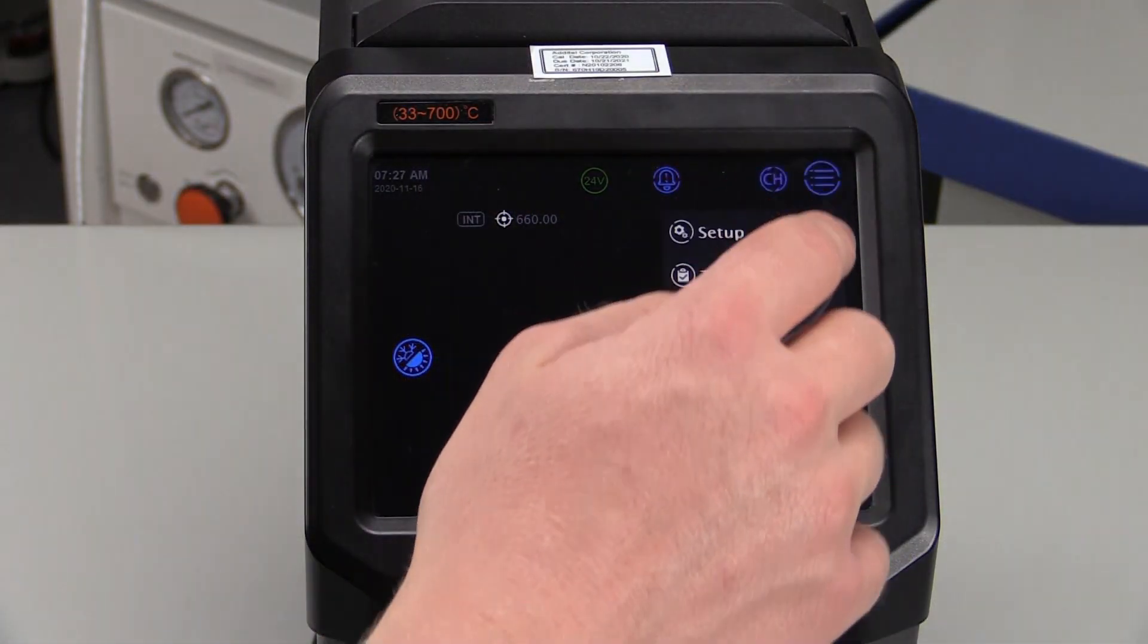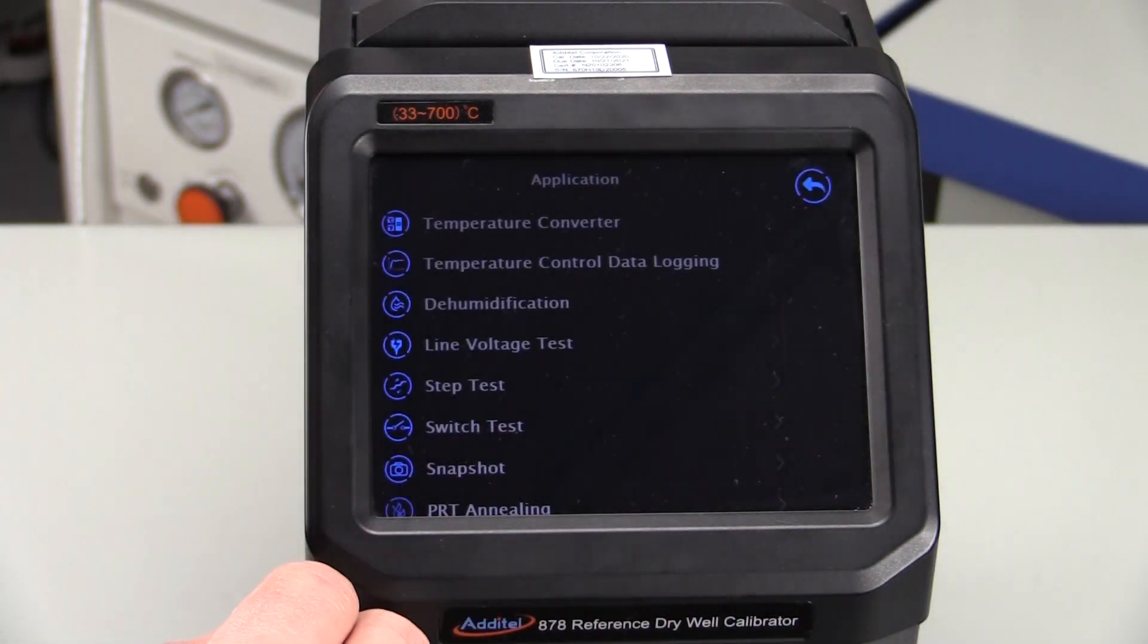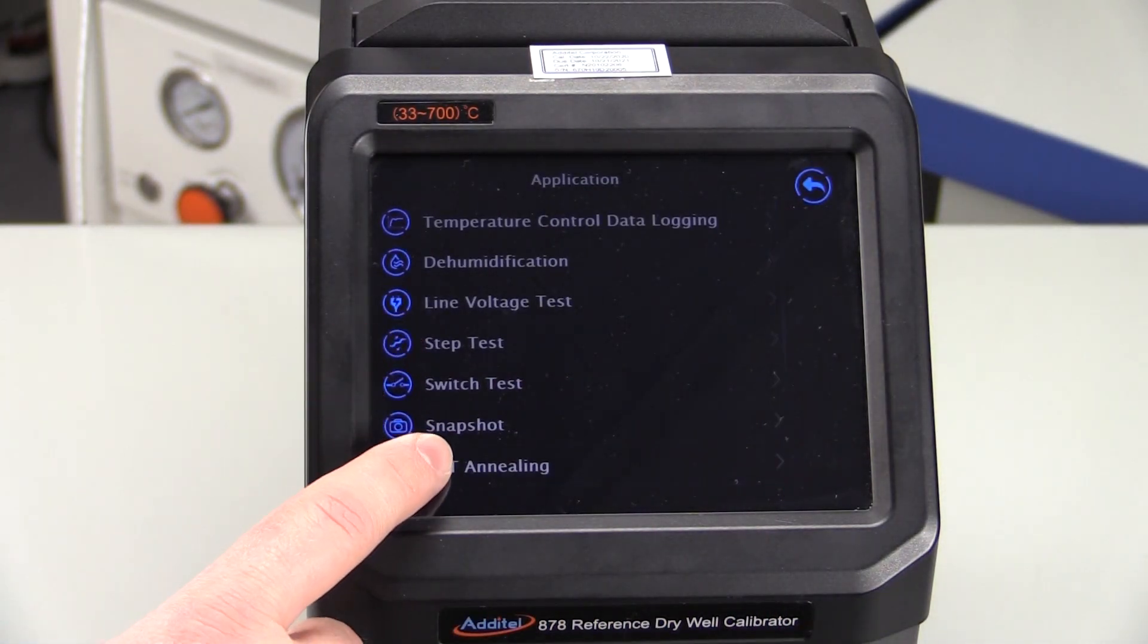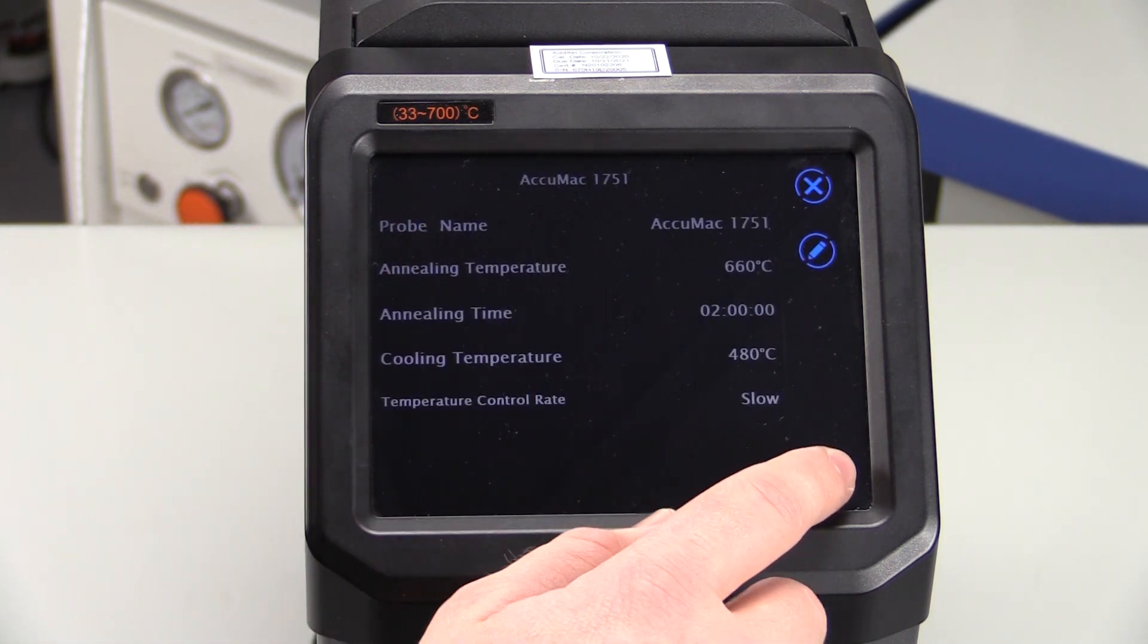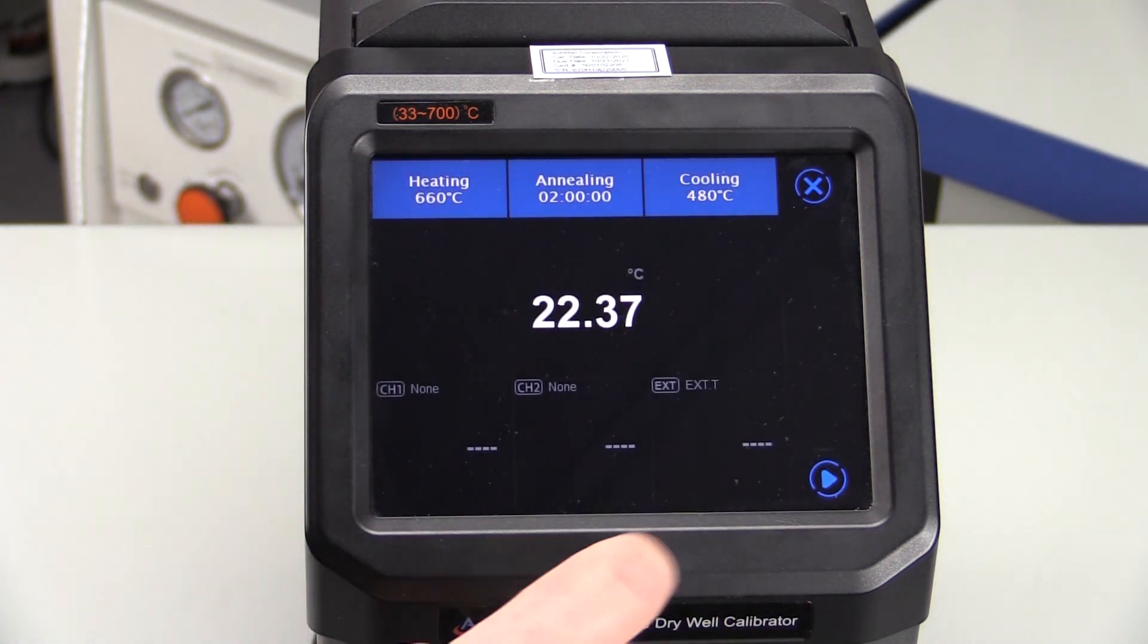Next, we will navigate to the automated annealing procedure. We can create a new procedure by touching the plus button or simply choose an existing procedure. With a quick tap or two of the reference drywell touchscreen, we are off and running.